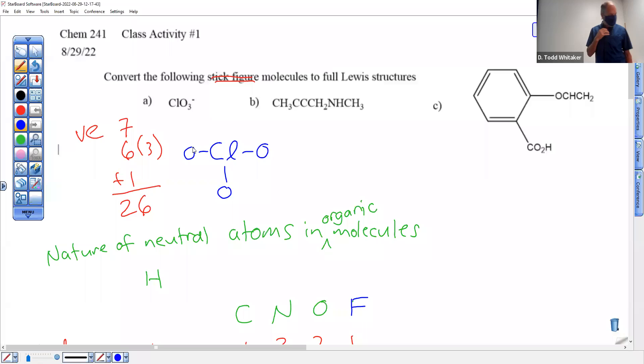Cl in the middle surrounded by three O's. We successfully avoided any O-O bonds. That's your skeleton right there. We don't have any oxygens bonded to oxygen, which we should always avoid.